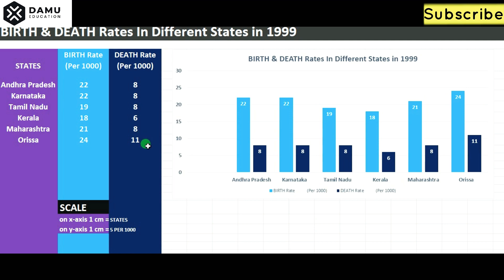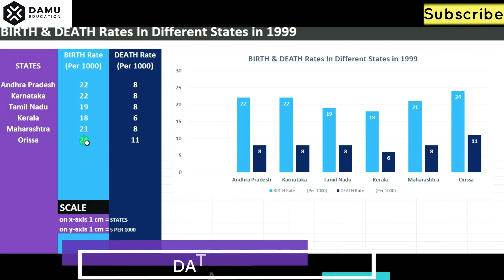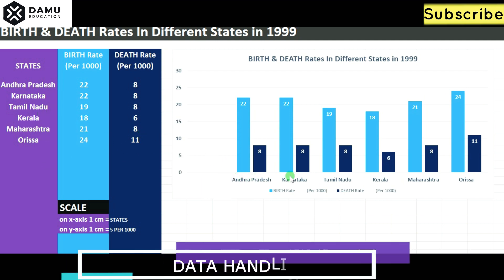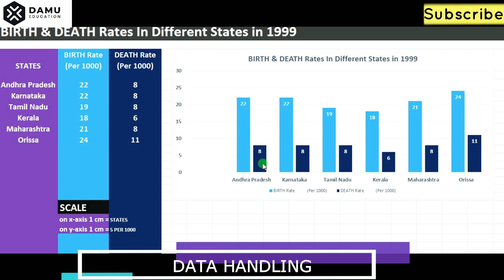We will construct the graph with all the state names on the x-axis: Andhra Pradesh, Karnataka, Tamil Nadu, Kerala, and Maharashtra. Sky blue color represents birth rate and dark blue color represents death rate. On the y-axis, one centimeter represents ten units, with divisions at five, ten, fifteen, and so on.